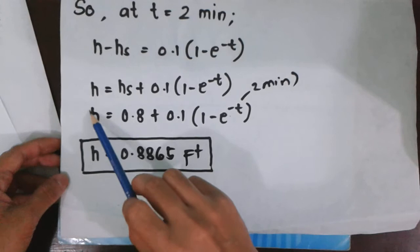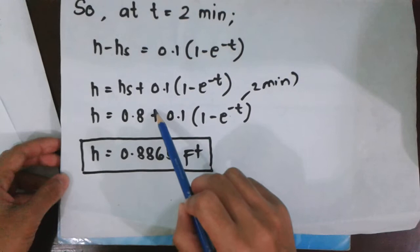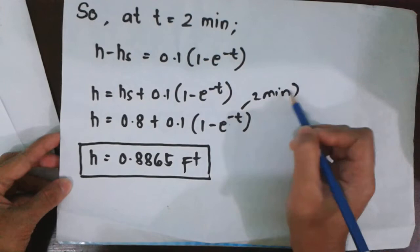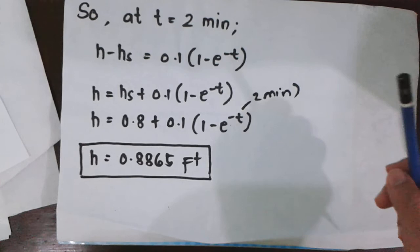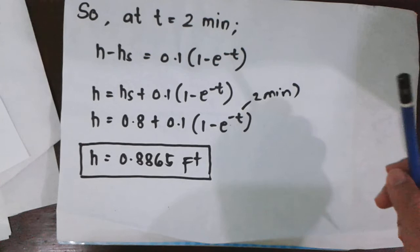Hs was already solved earlier, which is 0.8 plus 0.01 times (1 minus E to the negative t). T is 2 minutes. So, solving this using calculator, we have a height or level of 0.8865 feet.